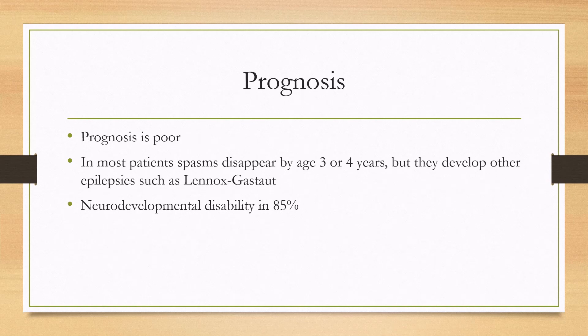The prognosis for infantile spasms is generally not good. In most patients, the spasms disappear by age three or four. However, they will commonly develop other epilepsies such as Lennox-Gastaut, which is very hard to treat. Most patients will also have neurodevelopmental disability.